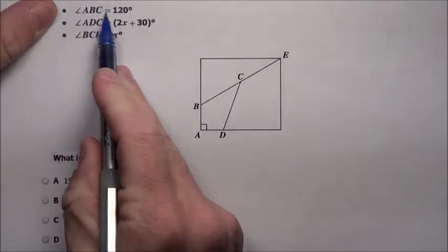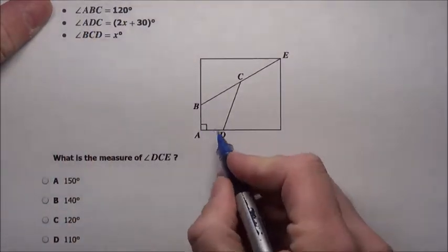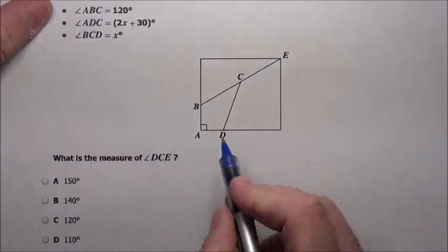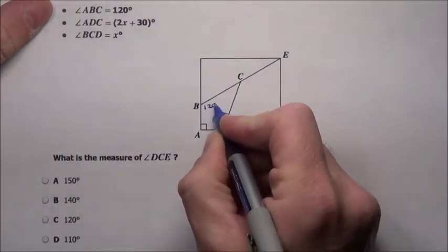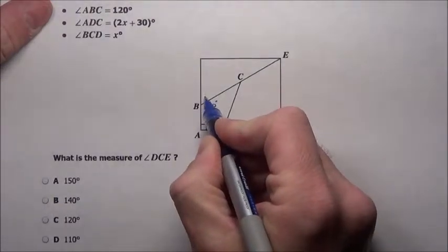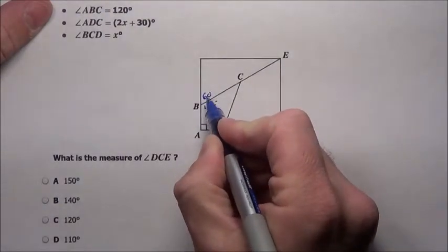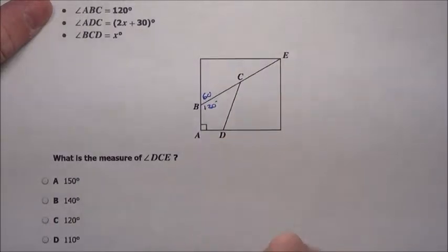It says angle ABC is 120 degrees. So A to B to C, this is 120 degrees. As soon as I know that, I know this other side up here is 60 degrees because that's a straight line. Those are a linear pair.